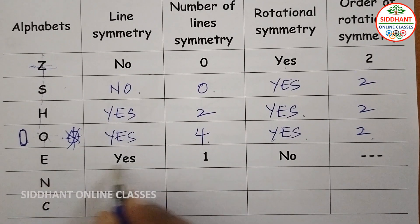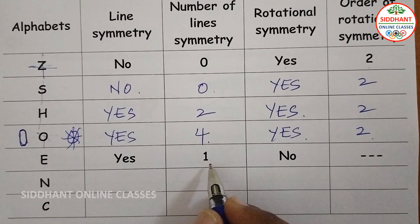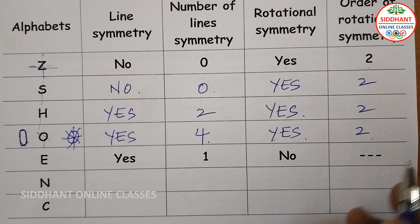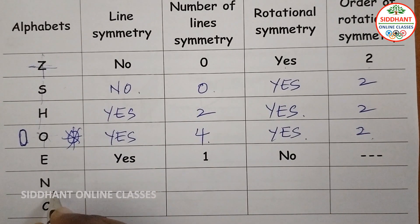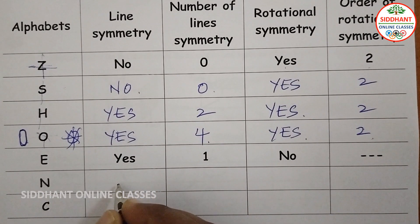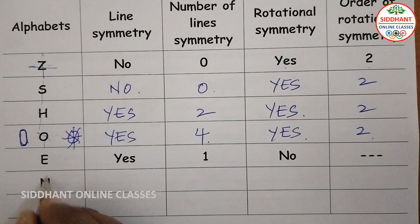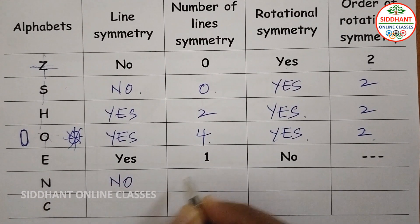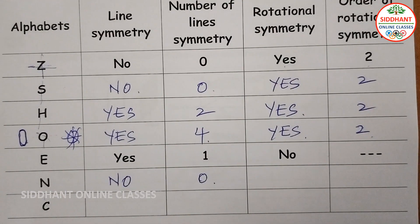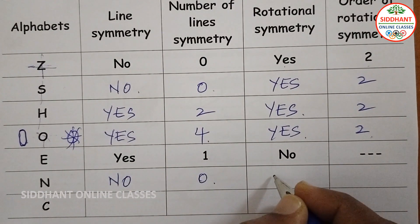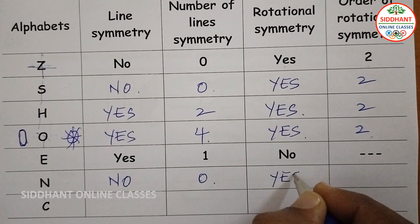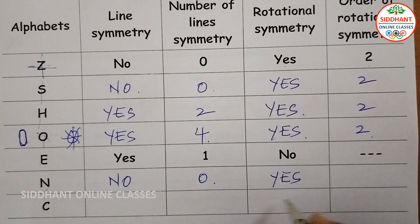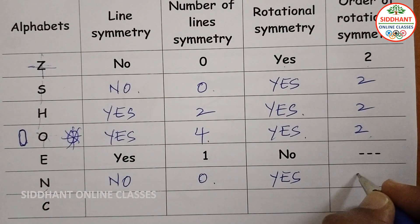Letter N. The data shows line of symmetry is Yes with 1 line. For rotational symmetry, when you rotate 90 degrees and another 90 degrees, you get the same N. That means the order of rotational symmetry is 2.